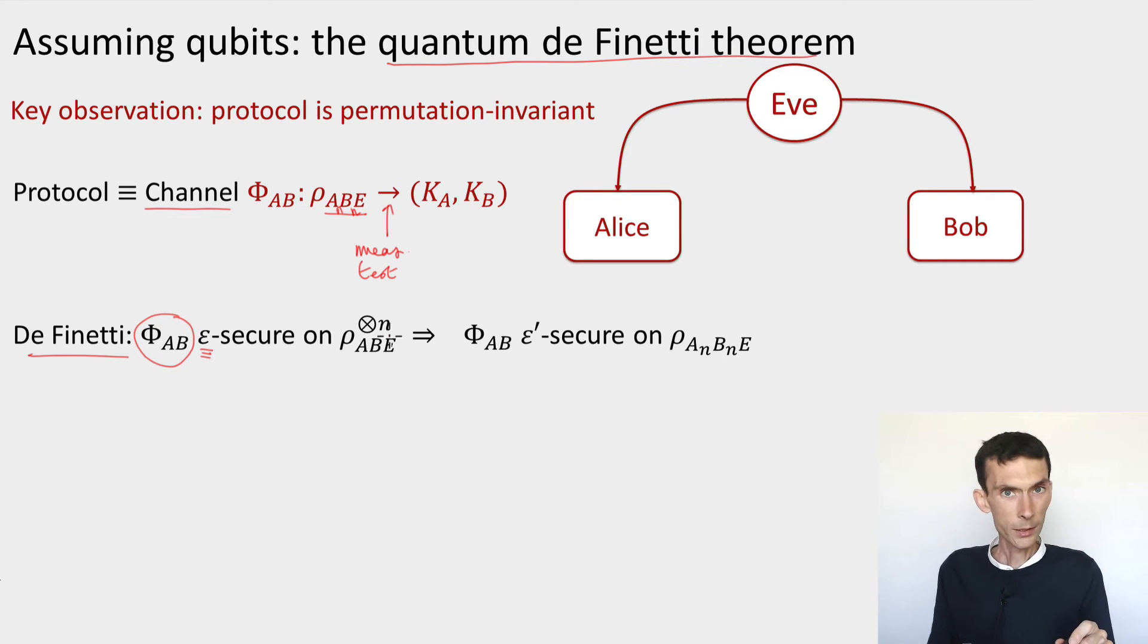When the input state is restricted to having a tensor product form, so basically a state that corresponds to collective attacks, then I can conclude that the exact same channel, so the same devices, same measurements, is going to be epsilon prime secure for some epsilon prime, on now arbitrary states. States that are made of arbitrary systems, but that have this permutation invariance.